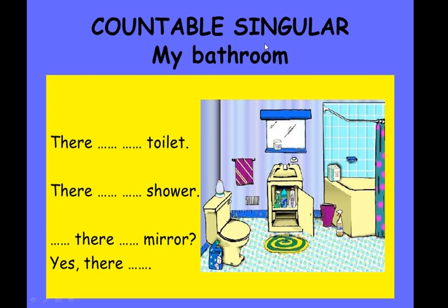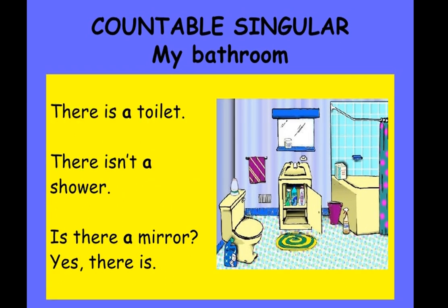Now for countable singular nouns — here is a picture of a bathroom. Use 'there is' or 'there isn't' to answer: there is a toilet, there isn't a shower, is there a mirror? Yes, there is.